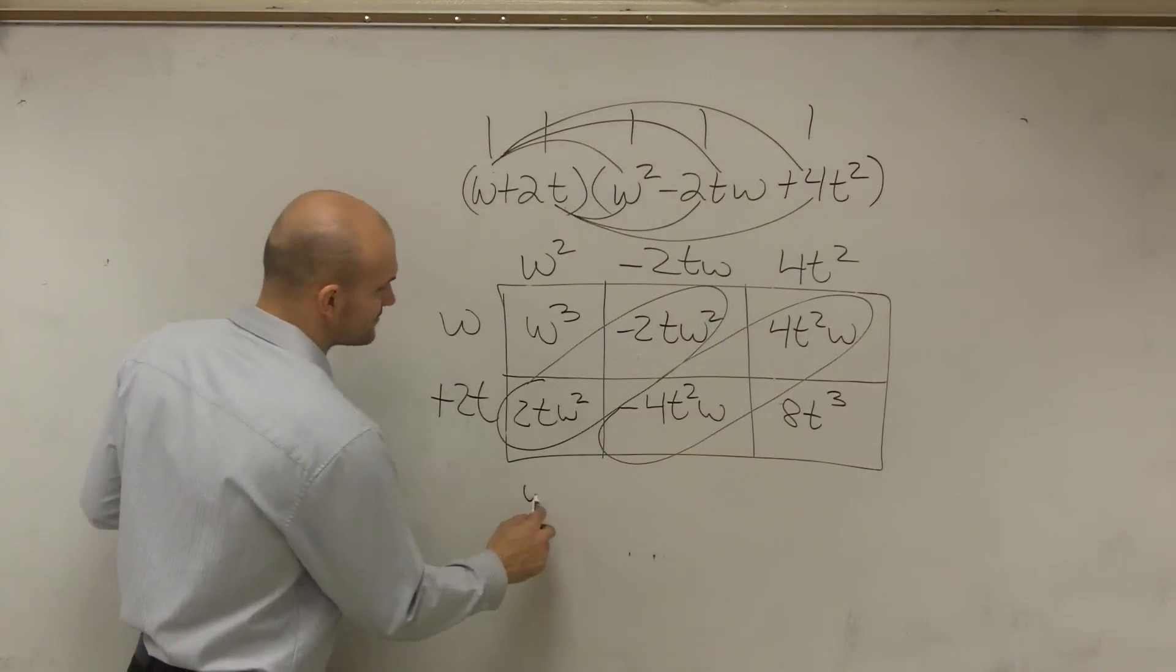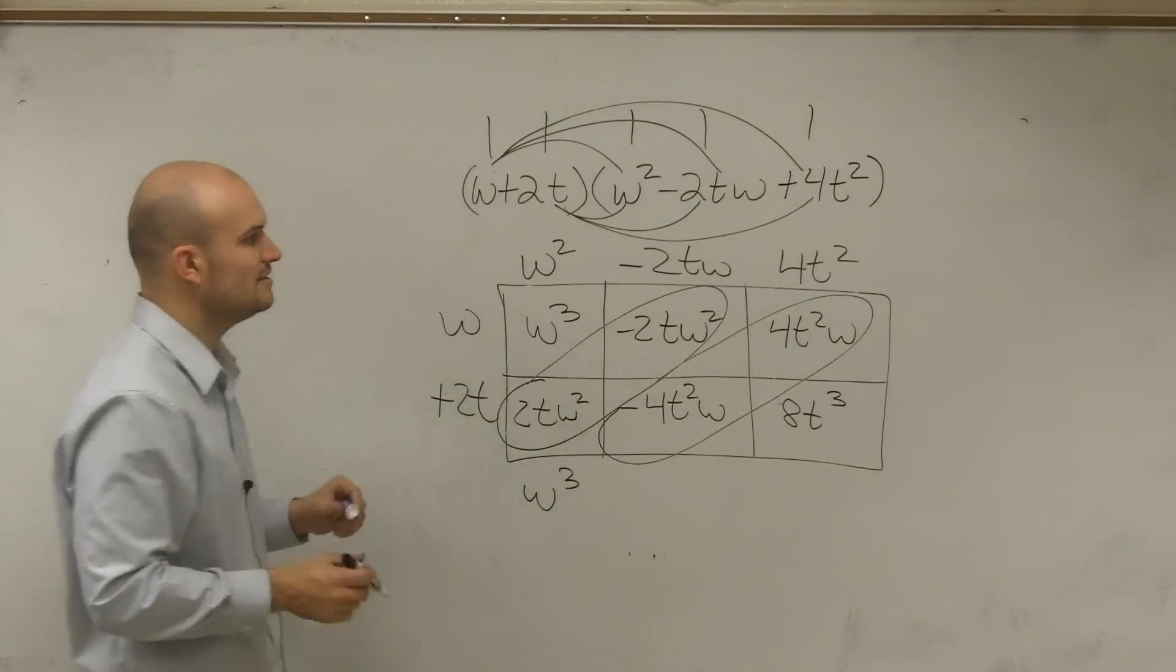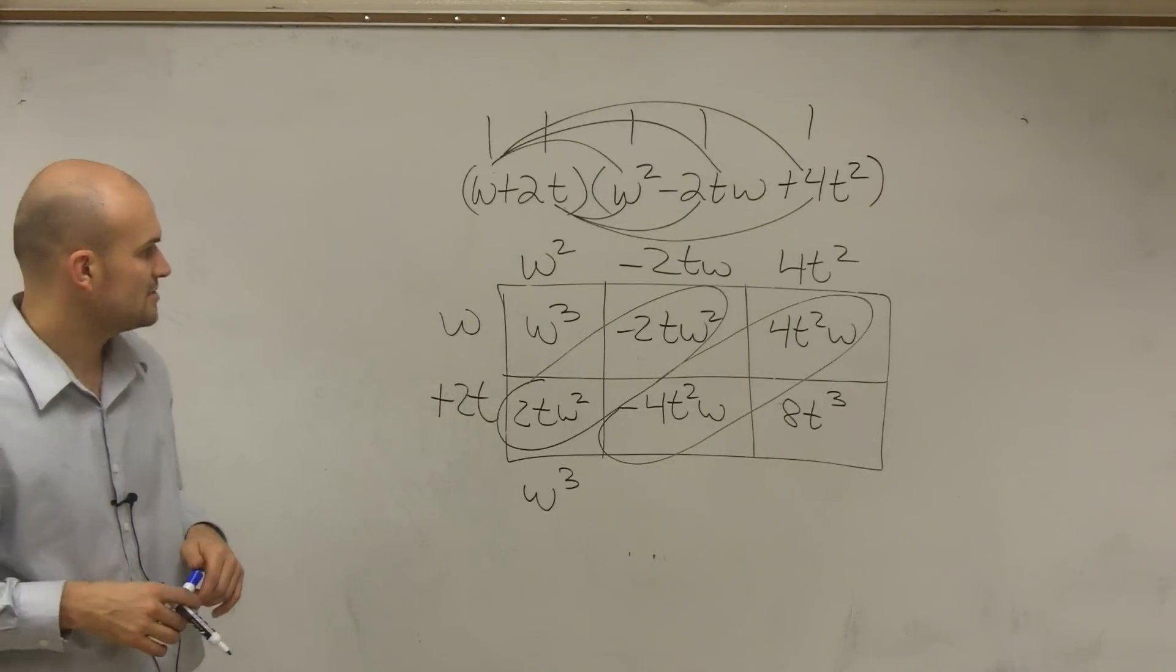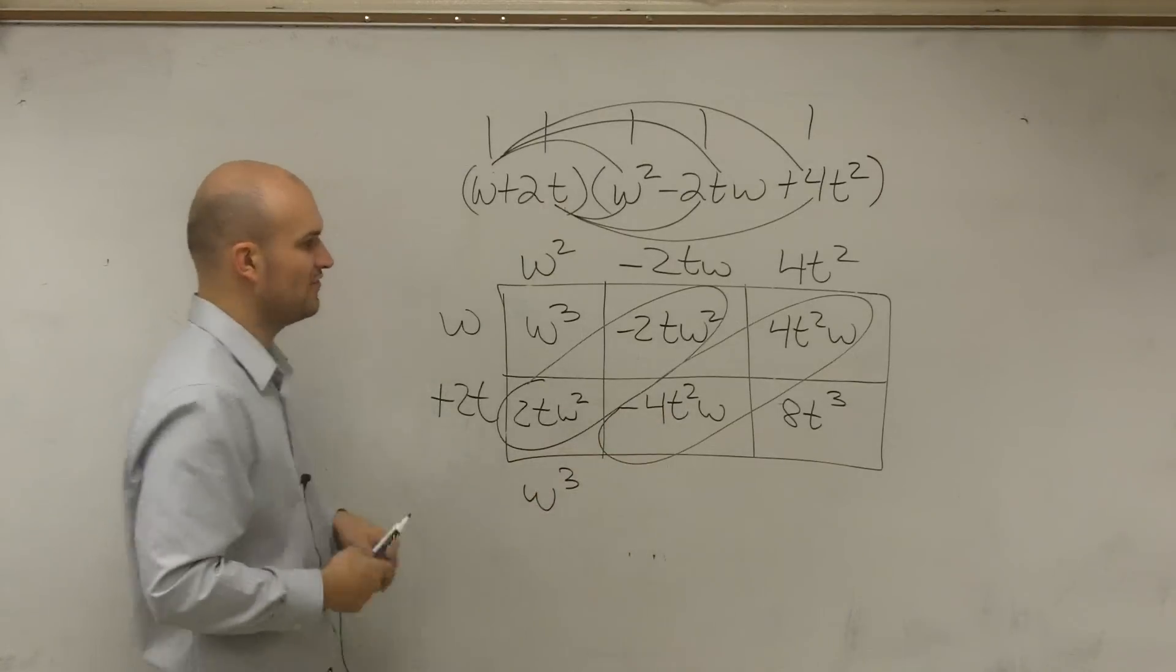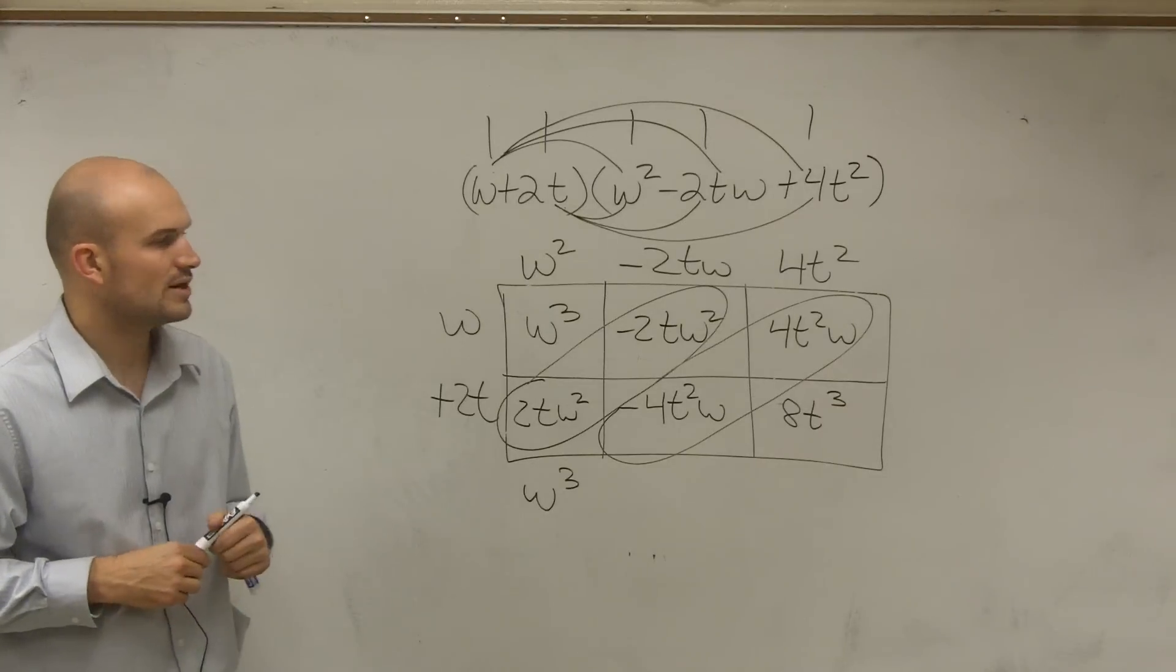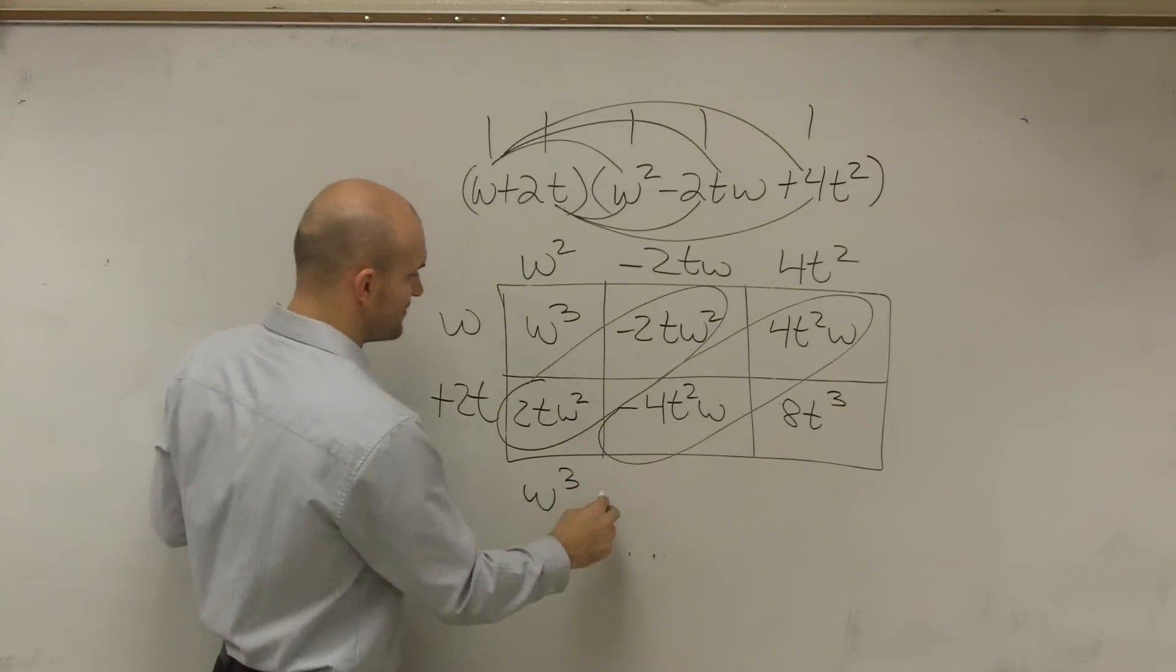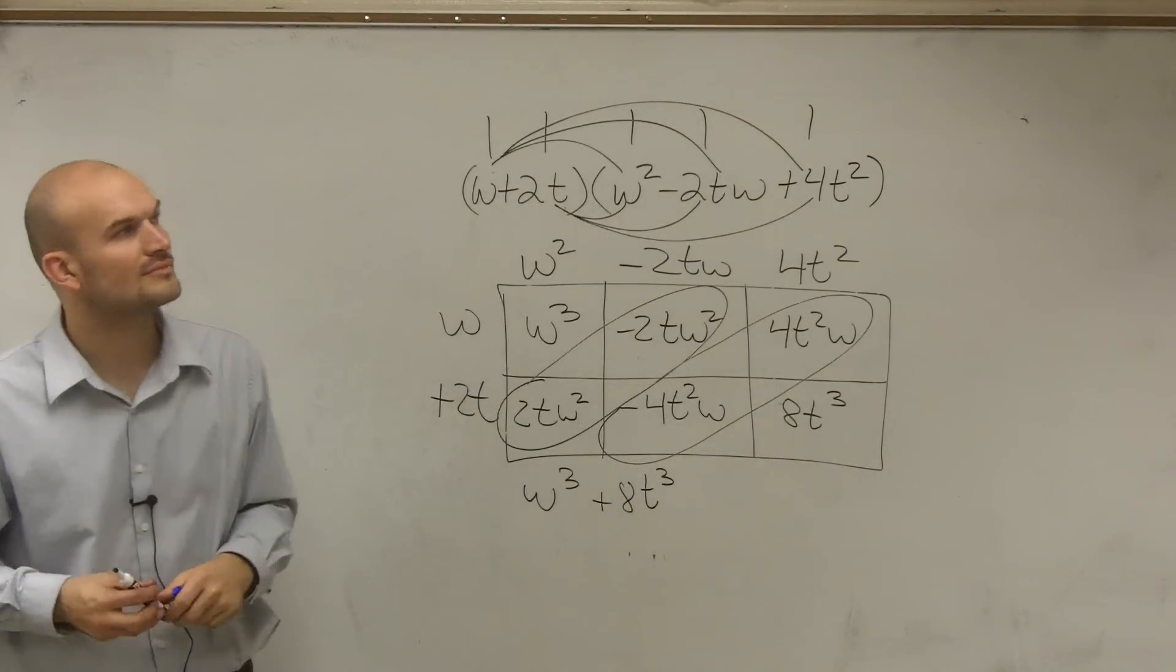So when I write my answer, I have w cubed. What's negative 2tw squared plus 2tw squared? Zero. So I don't even need to write it. Then I have negative 4t squared w plus 4t squared w, which is zero. And then I just have plus 8t cubed. Done.